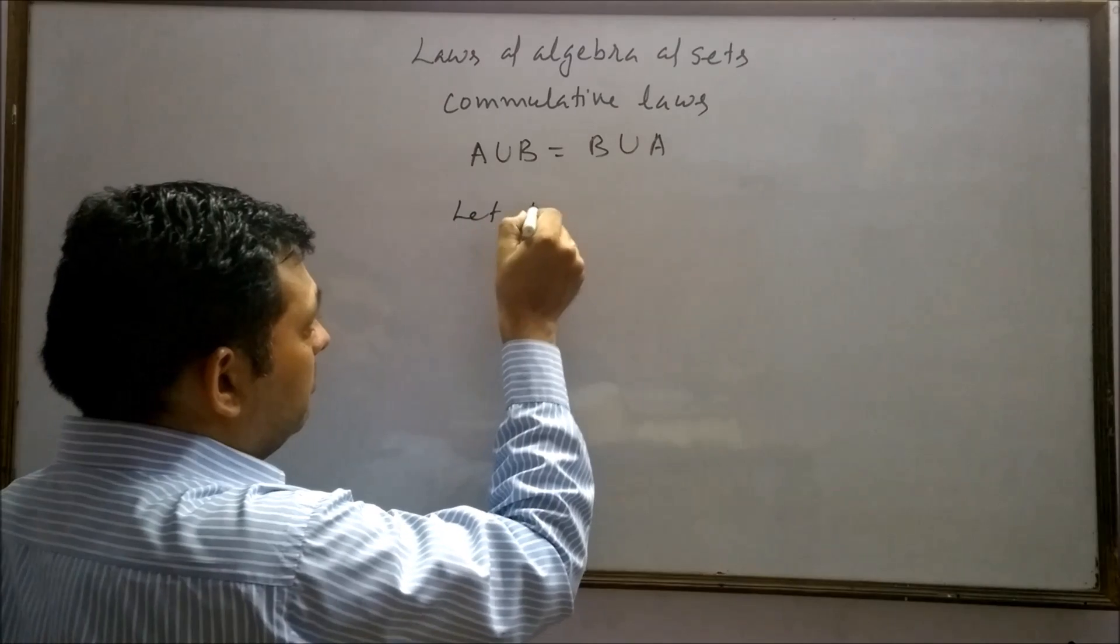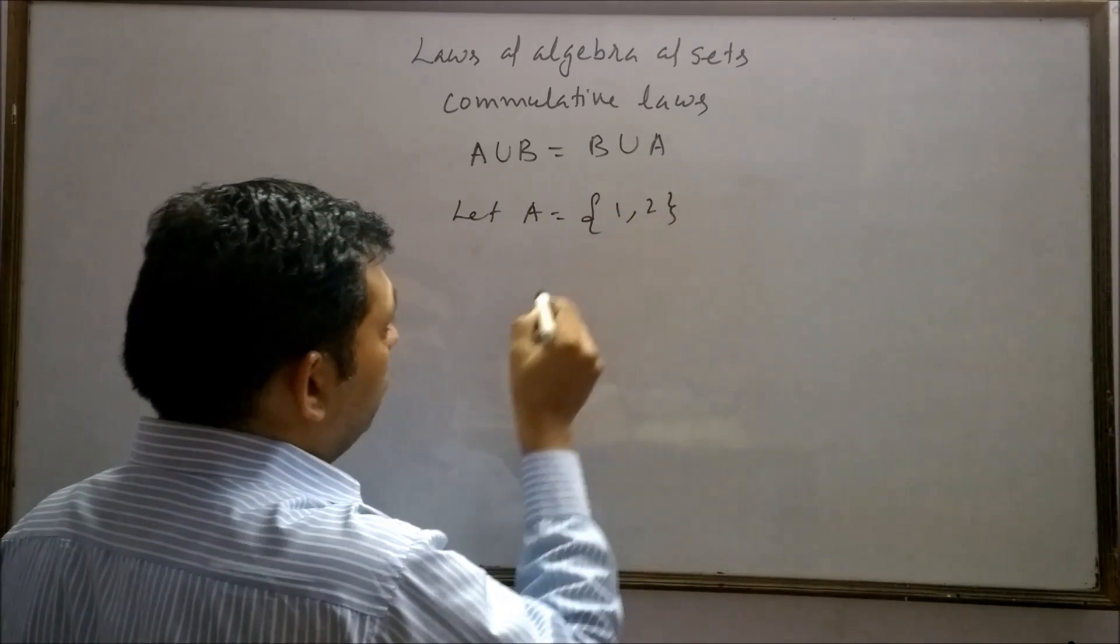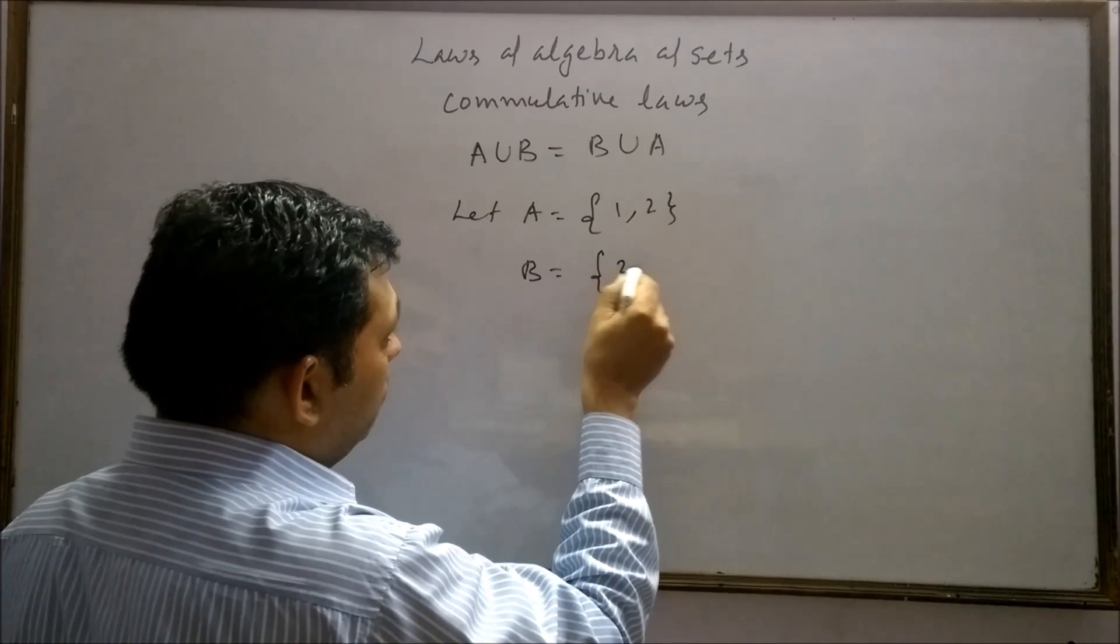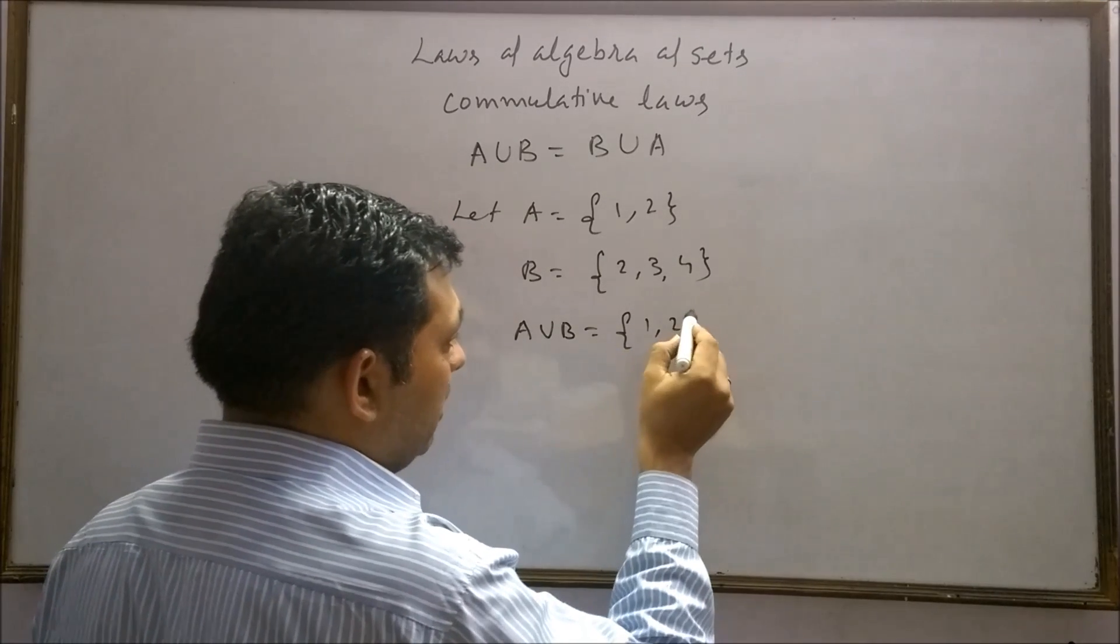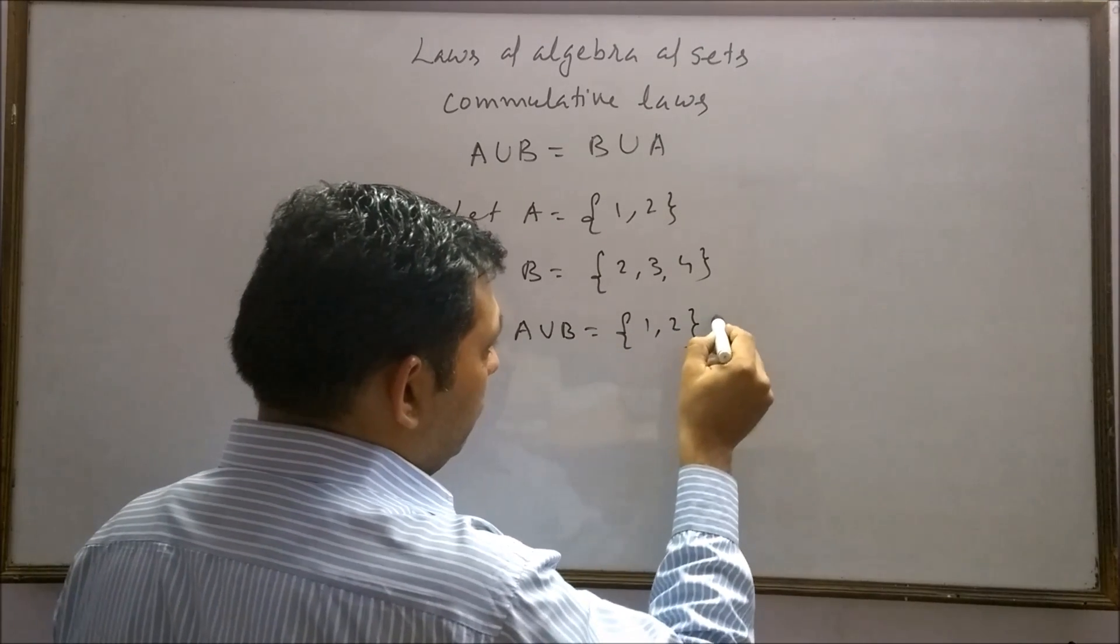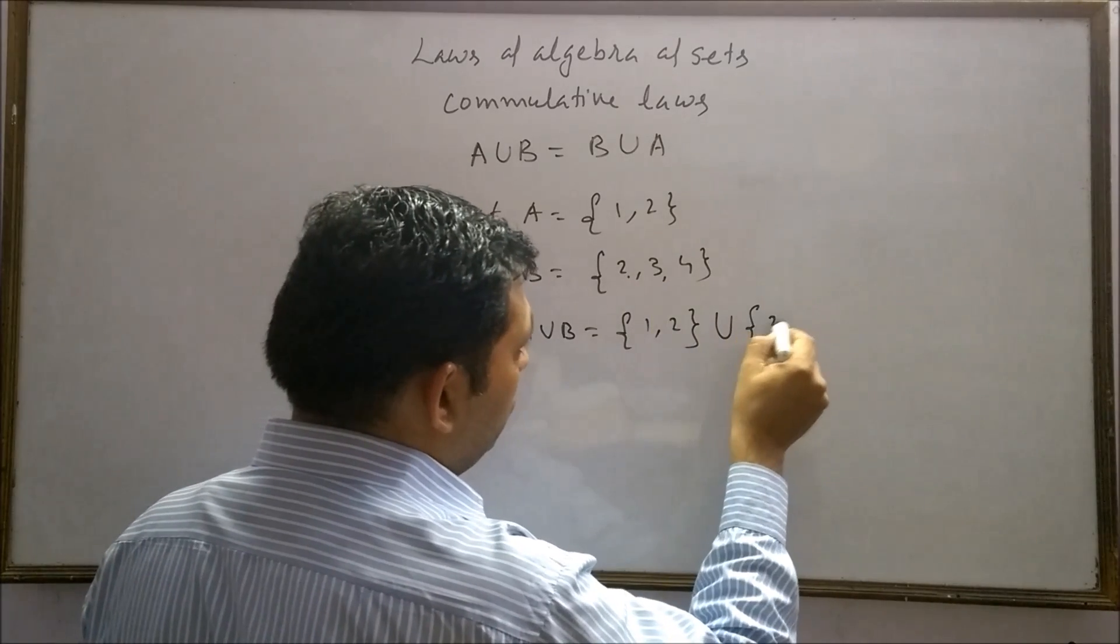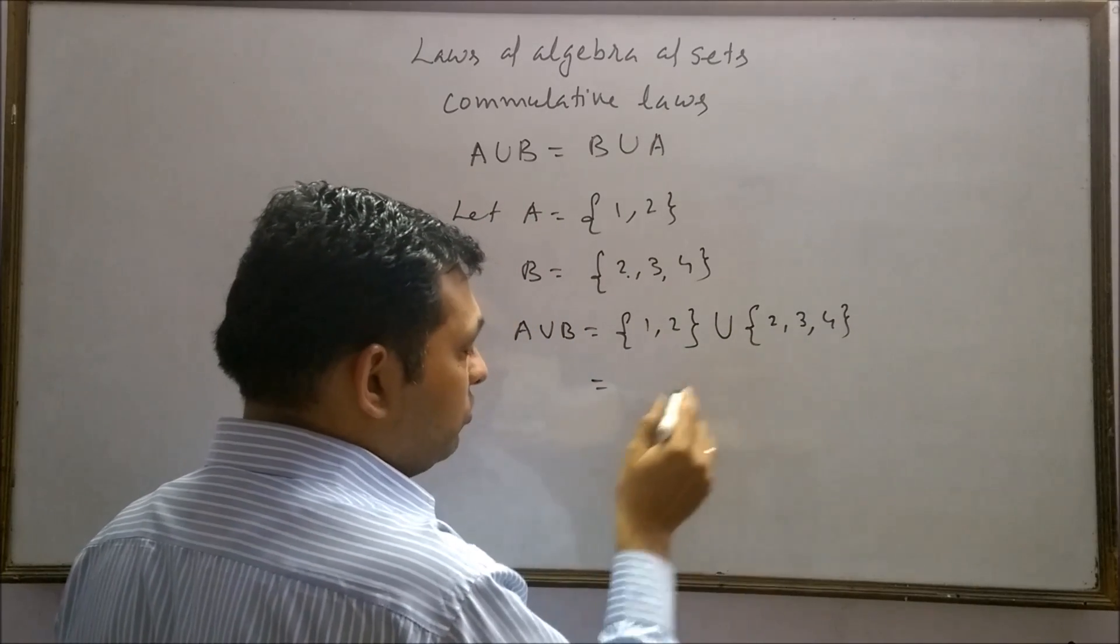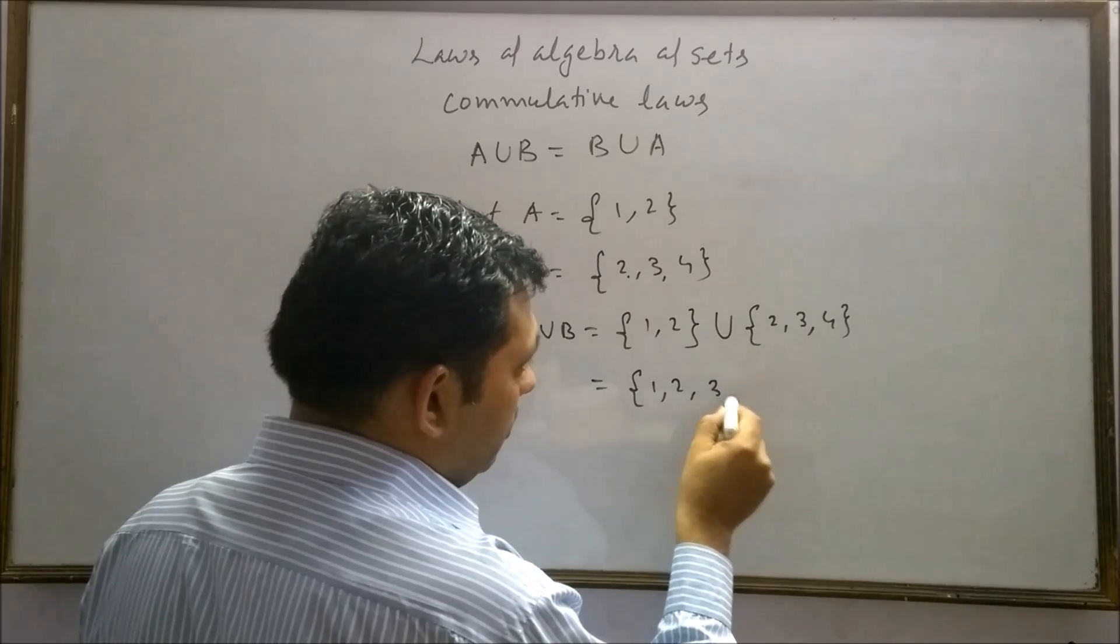For example, let set A contain {1, 2} and set B contain {2, 3, 4}. A union B equals the set containing {1, 2} union set B which is {2, 3, 4}. By combining these two sets, we get {1, 2, 3, 4}.